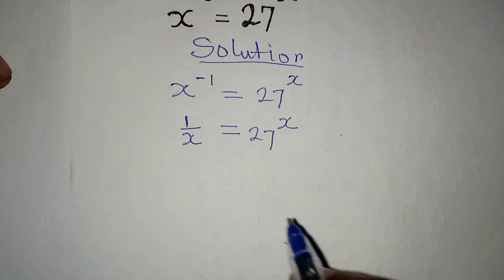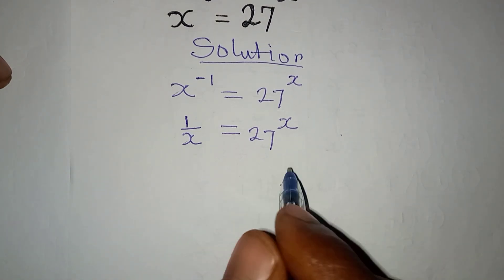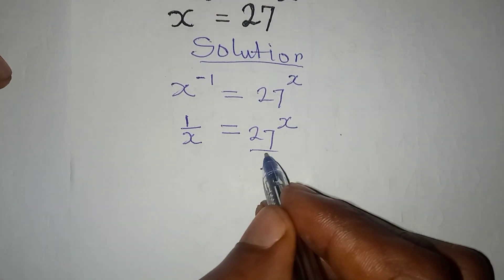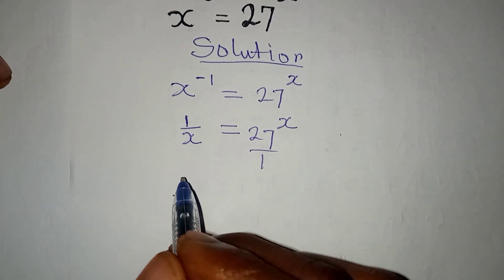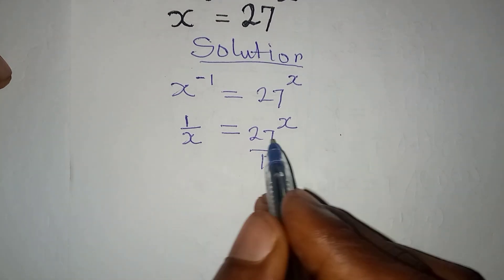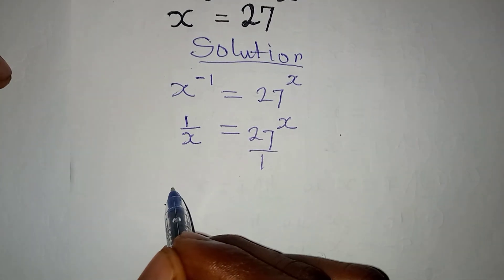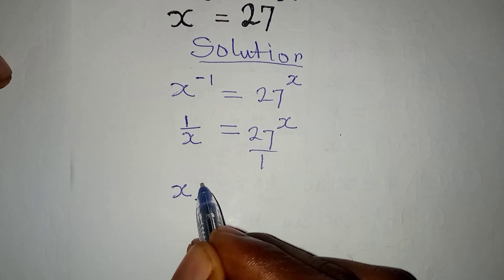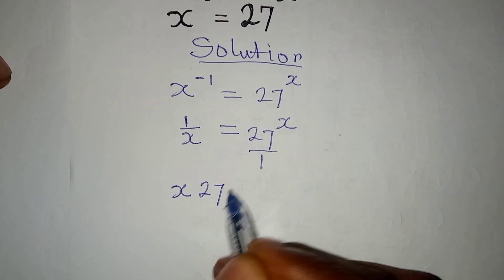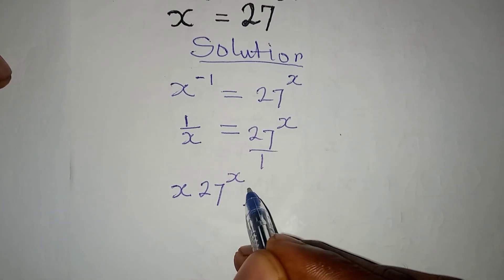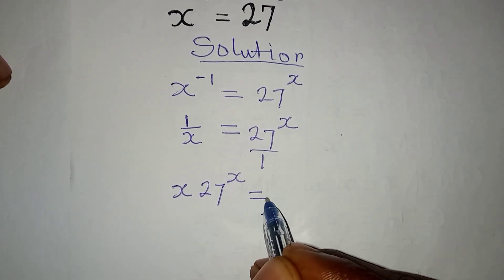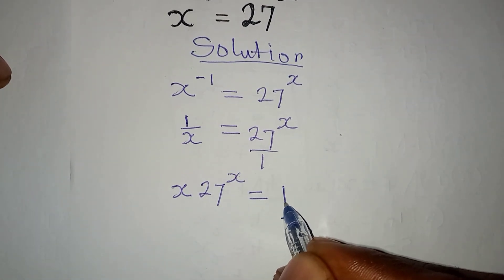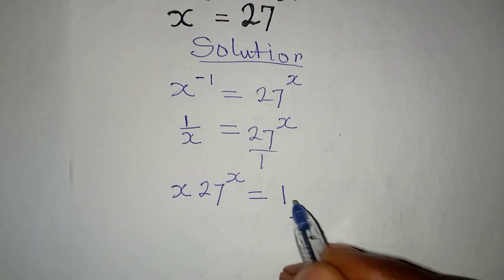The next thing I'm going to do is cross multiply, so that when I do that this will be over 1, and we have x times 27 to the power of x, and this will be equal to 1 times 1, which is 1.